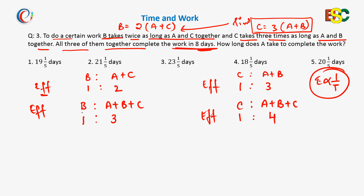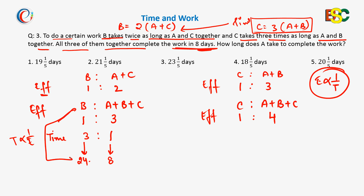Since the efficiency ratio of B to A plus B plus C is 1 is to 3, the time ratio will be 3 is to 1 because time is reciprocal of efficiency. All three together take 8 days, so the value 1 corresponds to 8 days, making the value 3 equivalent to 24. So B alone takes 24 days to complete the work.